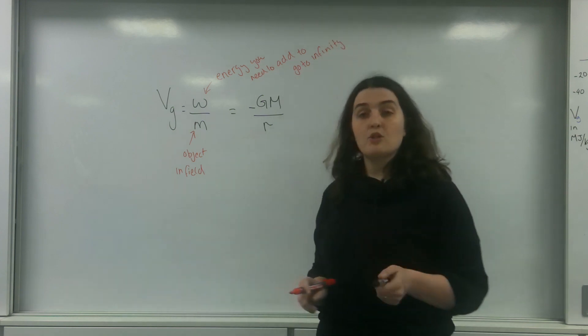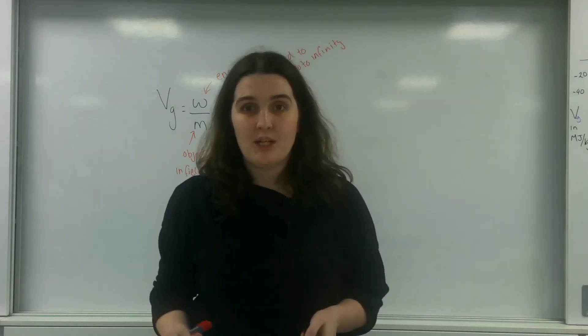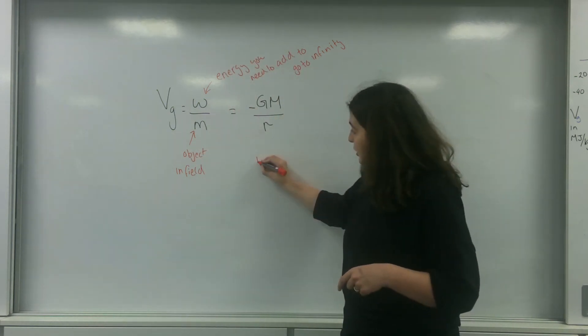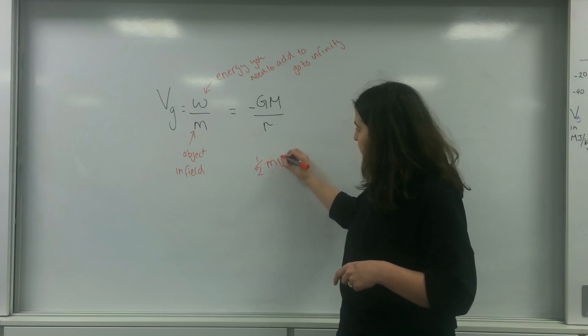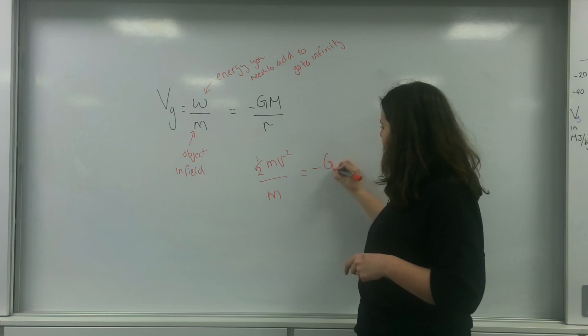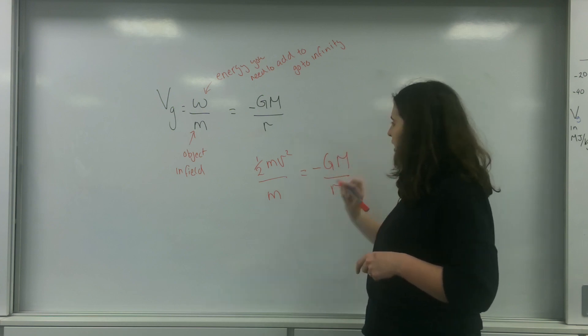In this case, I'm going to talk about getting it to kinetic energy. So what I'm going to do is I'm actually going to put the kinetic energy formula in here. So I'm going to do half mv squared over m equals minus big GM over r.